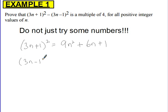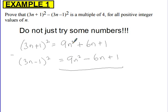And 3n minus 1 squared is 9n squared minus 6n plus 1. We've now expanded both expressions, so we subtract the second from the first. 9n squared minus 9n squared is 0. 6n subtract negative 6n gives 12n. And 1 subtract 1 is 0. So we're left with 12n.